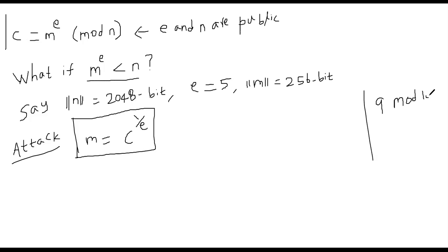So you have this nice situation now from an attacker's perspective. m power e will be less than n. That means the ciphertext c can be easily reversed. Take the ciphertext and compute the e-th root. You get back the message m. That's what I'm going to show to you. Why would this work?